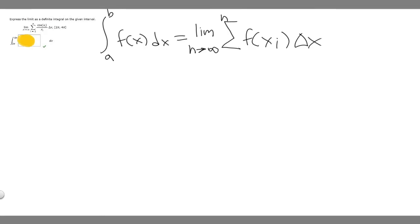In this problem, we're told to express the limit as a definite integral on the given interval. We have the limit as n approaches infinity, cosine of x sub i over x sub i, delta x, from 2π to 4π.